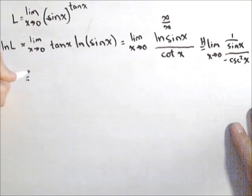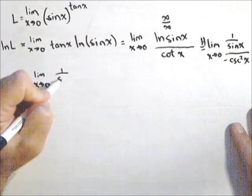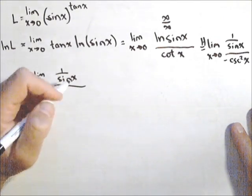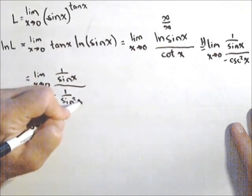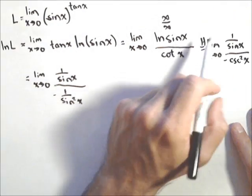So, coming back over here. Let's see what we got. Again, we simplify before we make any rash decisions. So, I've got one over sine x over negative cosecant is one over sine squared x. And I gotta go back because I made a small mistake.